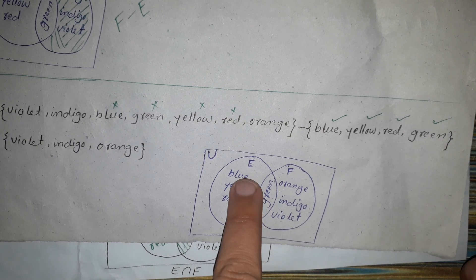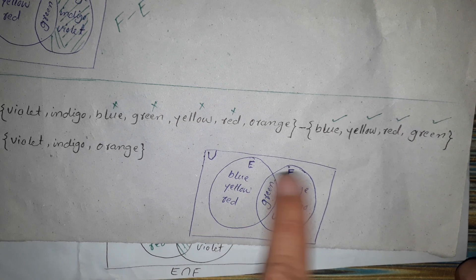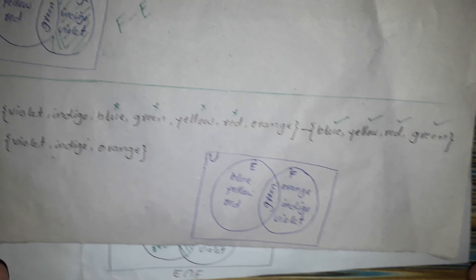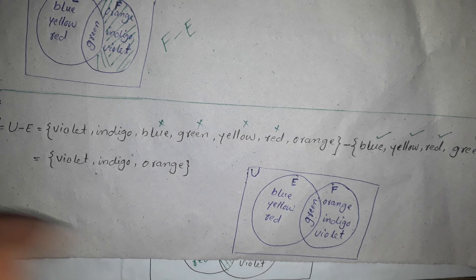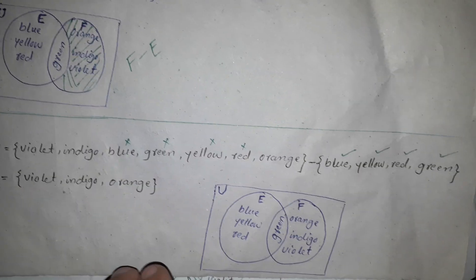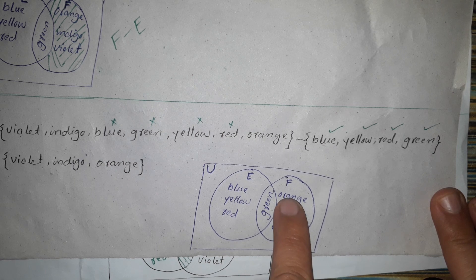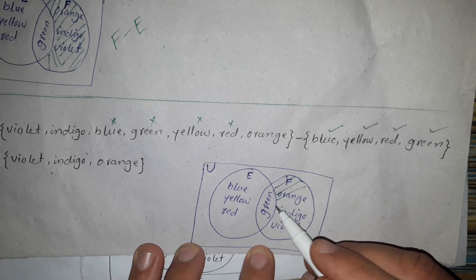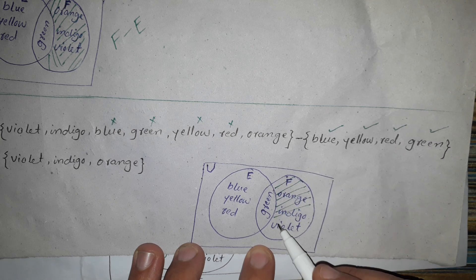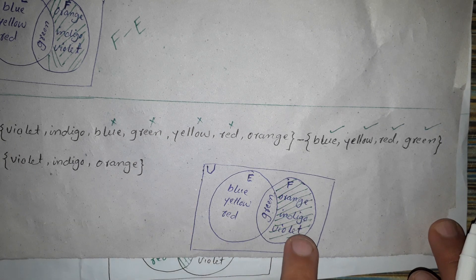The diagram is the same as E set or F set or the overlapping sets. Green is the same as the other layer of the green. The answer is the same as the other area — violet, indigo, orange. We are going to shade the area of the orange, violet, indigo, orange. Violet, indigo, and orange, and we are going to shade the answer — the area among the shirt, not the complement. The unit is here.